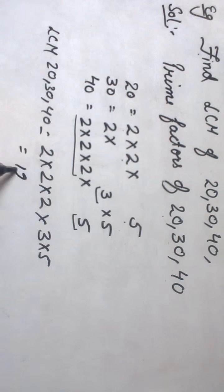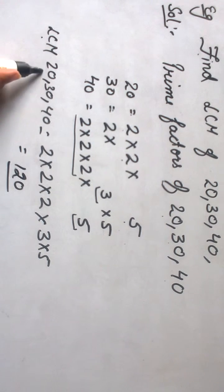we will have 120. So, LCM for 20, 30 and 40 is 120.